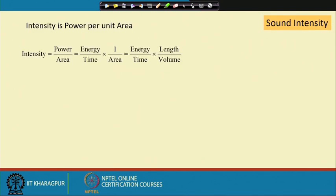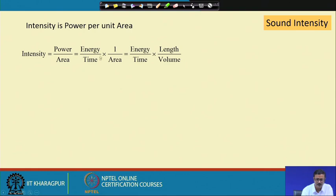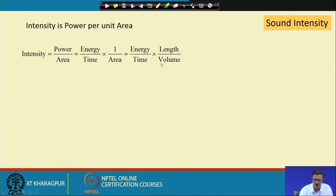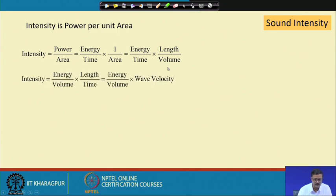Let us revisit sound intensity. Intensity is nothing but power per unit area: I = W/A. Power is energy per time — joules per second, which is watts — so intensity is watts per meter square. This area can be rewritten as length divided by volume, and rearranging, we get energy divided by volume, multiplied by length divided by time. Length divided by time is the velocity of the wave.